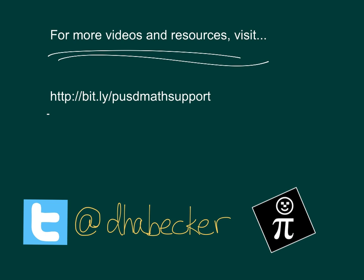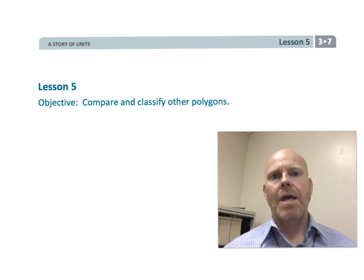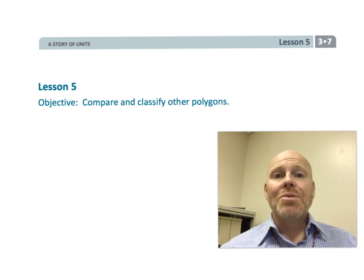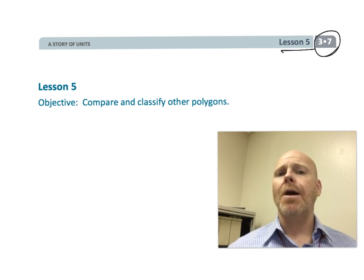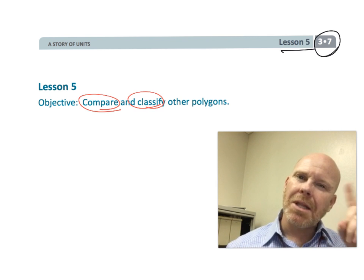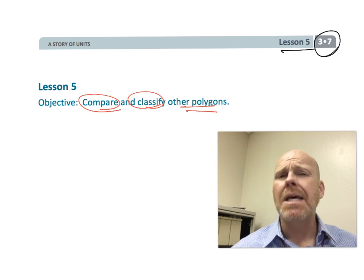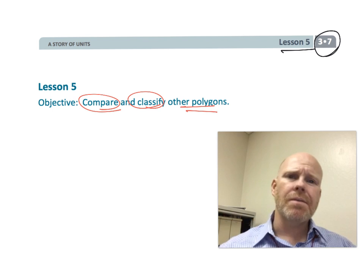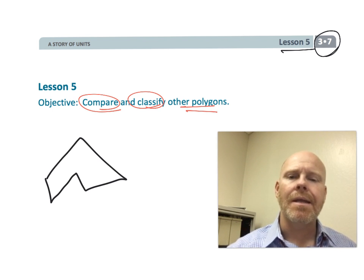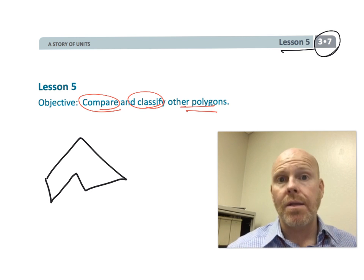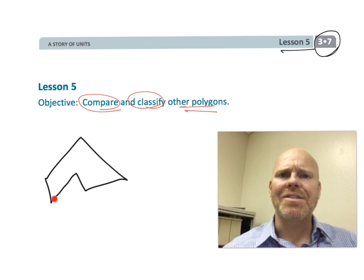This is third grade Module 7, Lesson 5. In this lesson, students are going to be comparing and classifying polygons — really looking at the sides in the concept development, and at the homework we start to branch out and also talk about angles. The really important thing in this lesson is the concept of a regular polygon and what a regular polygon means. Let's get started.